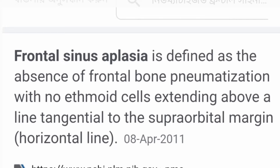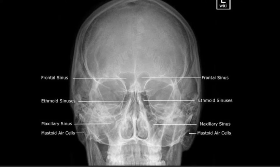For frontal sinus non-pneumatization, we define frontal sinus aplasia. It involves the frontal sinus, ethmoid sinus, and maxillary sinus. If the mastoid air cells are not pneumatized, it is normal — it is a key distinction that not pneumatized does not always indicate pathology.